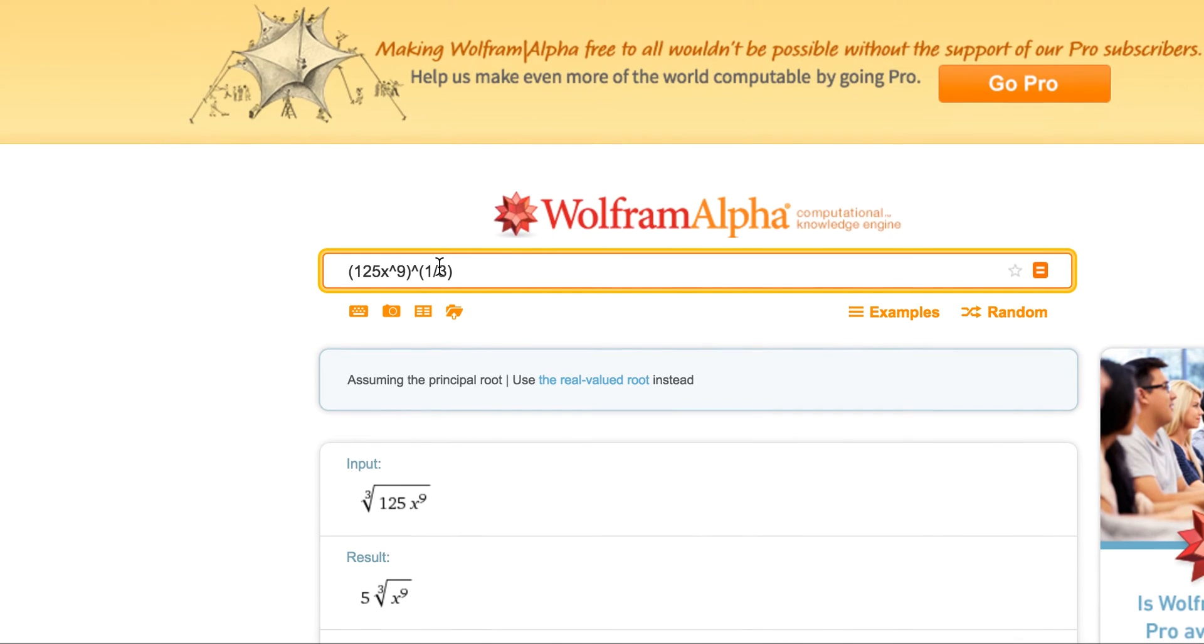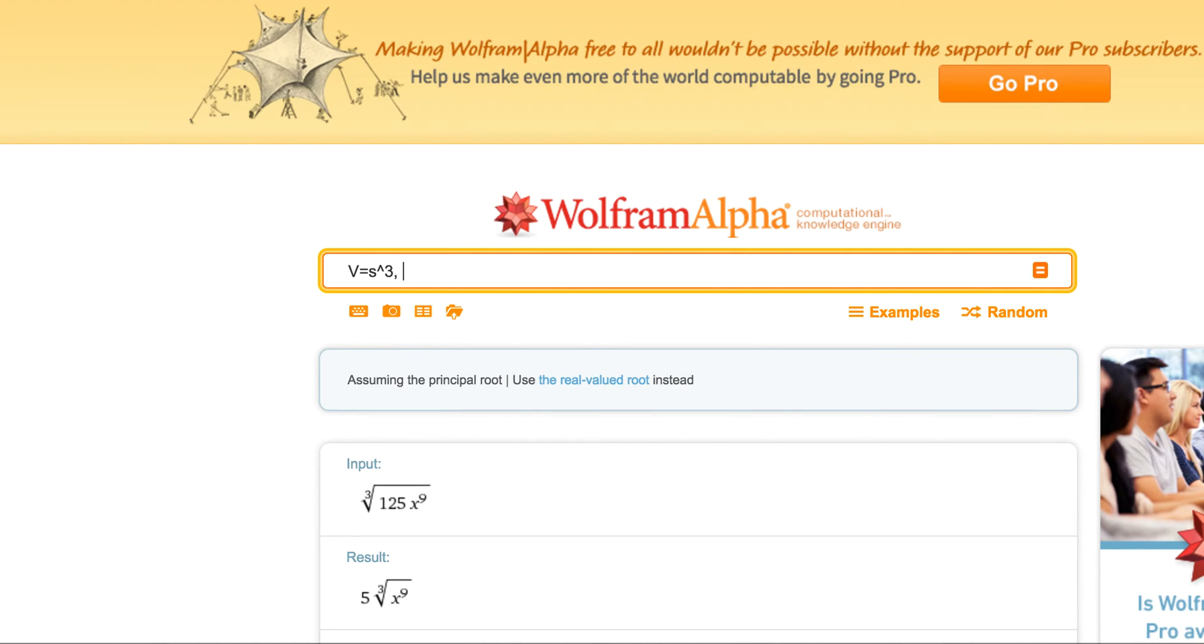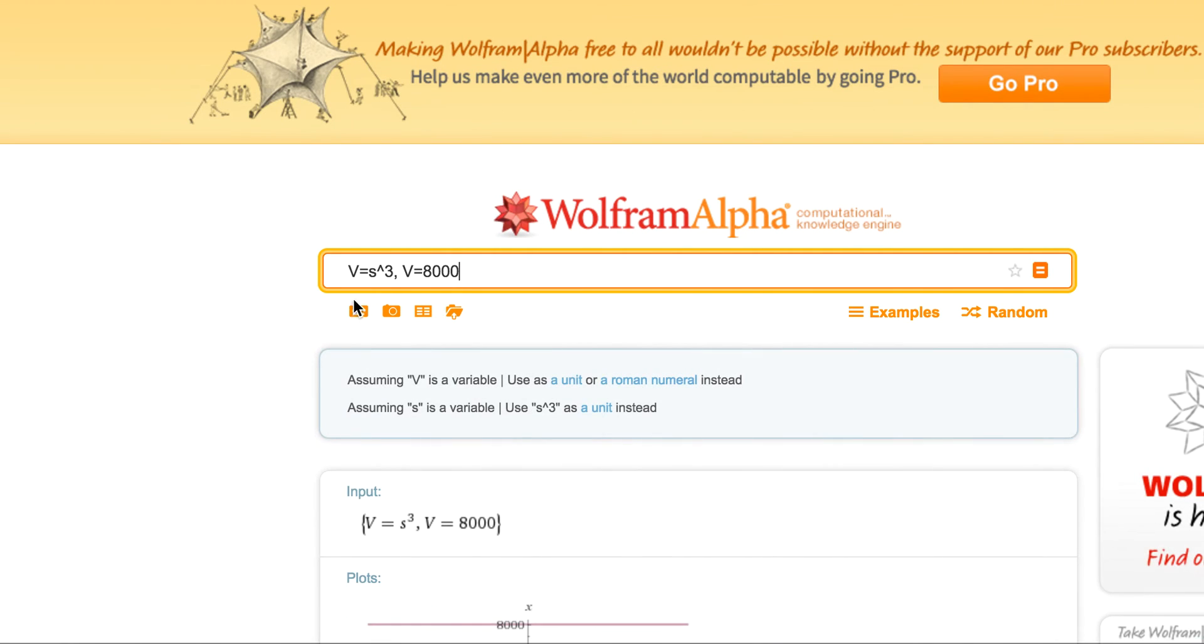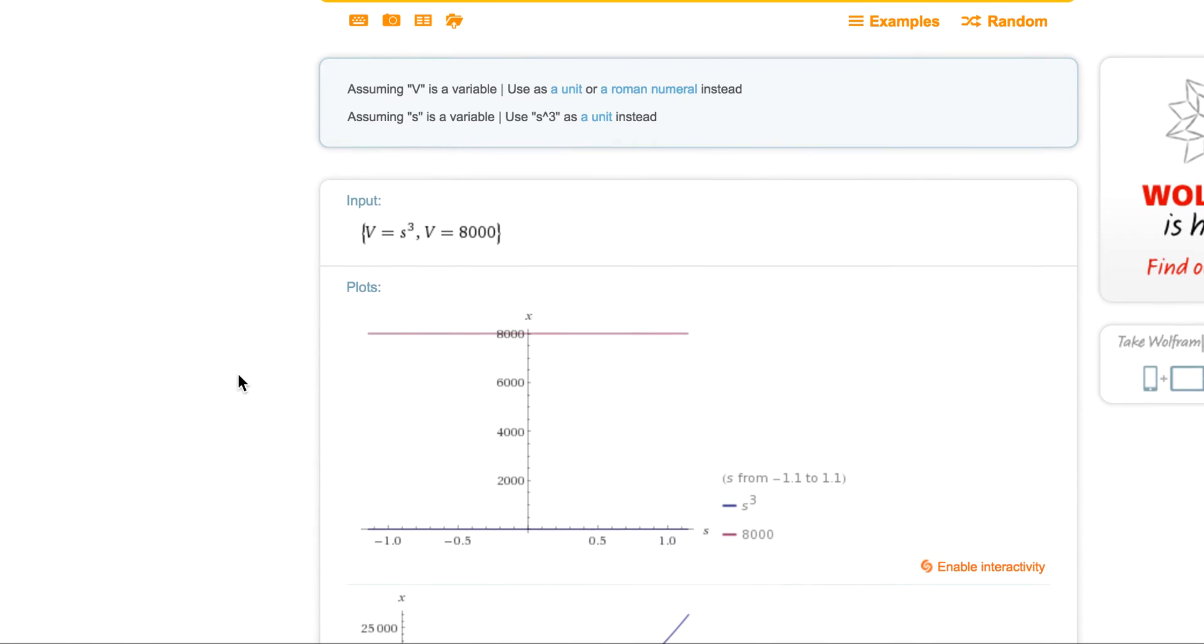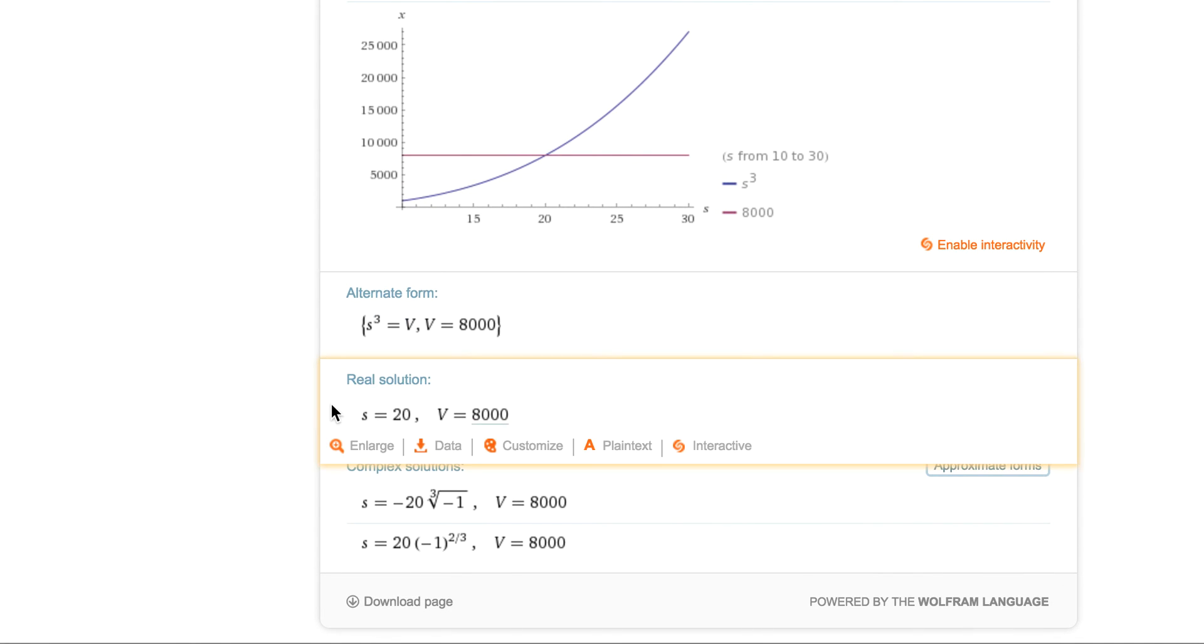So let's go up here. I'm going to say v equals s cubed, comma, v equals 8,000. That's it. That's what we were given. I didn't say solve for s, but Wolfram Alpha is going to say hey, I could solve for s if you want to. And so if we scroll down here, s equals 20. And that's what they had.